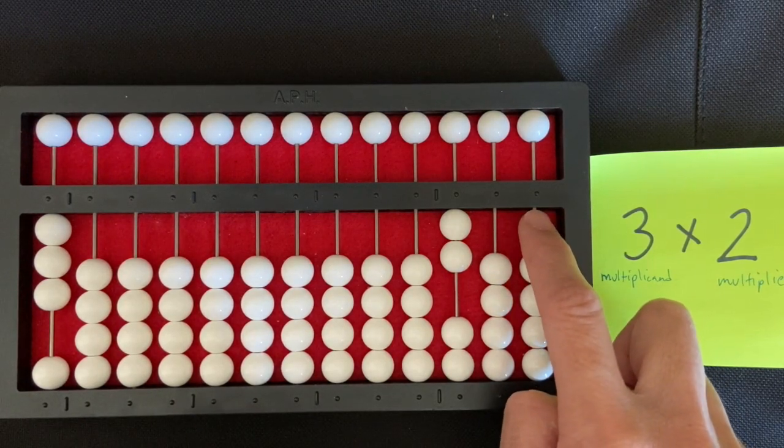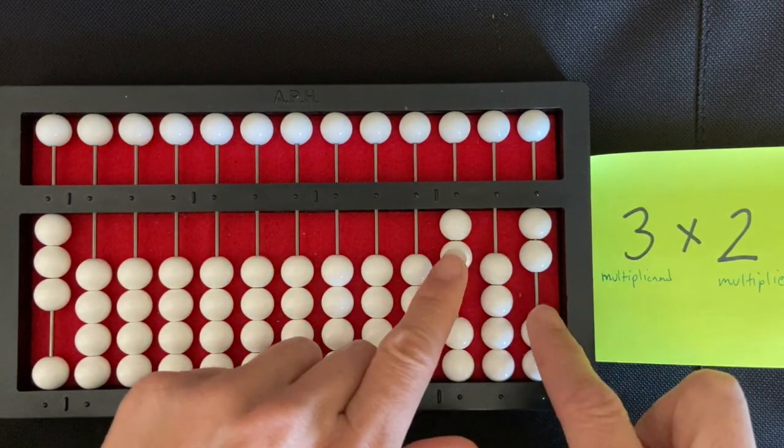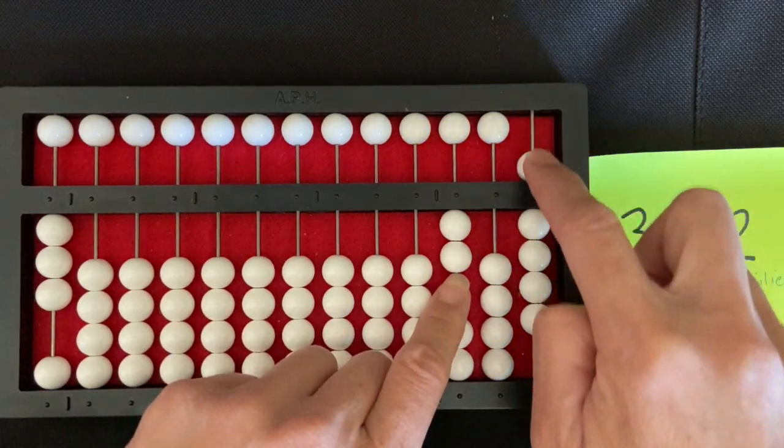So I need to set six here in the units rod, one, two, three, four, five, six.